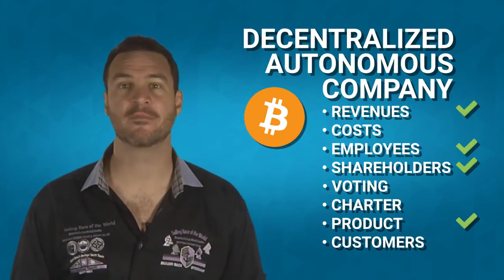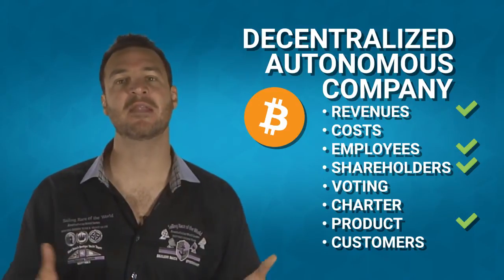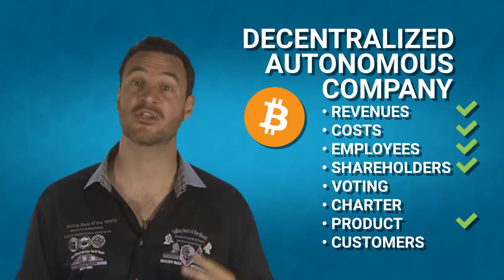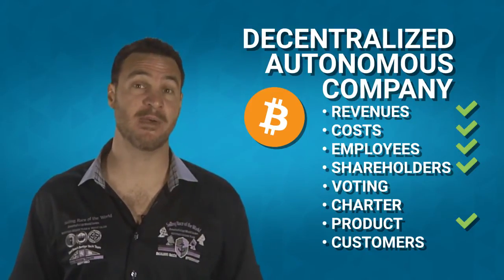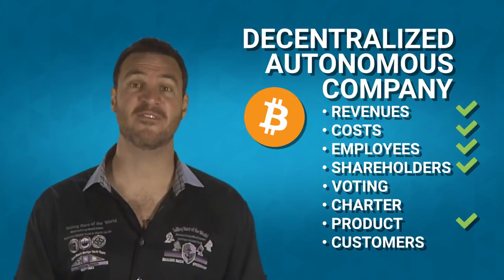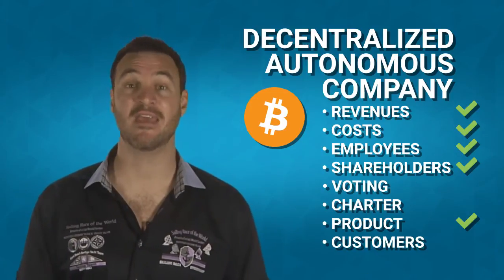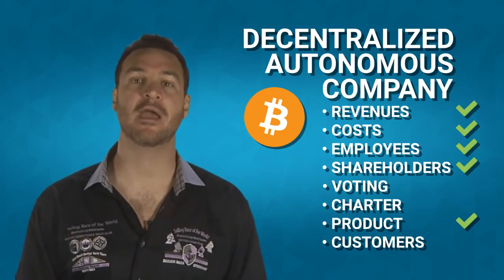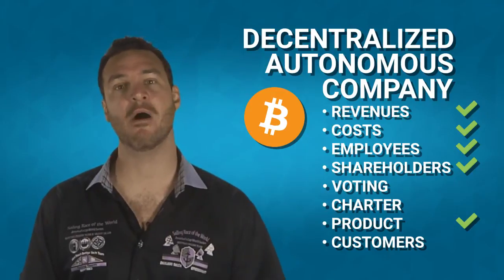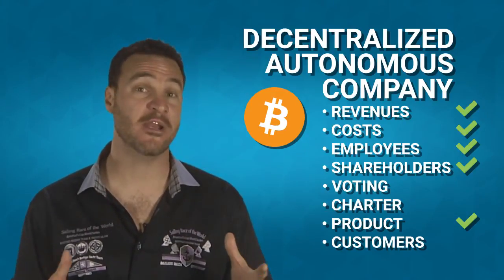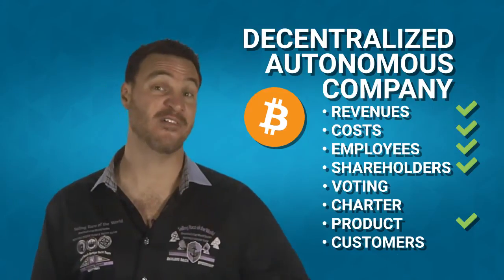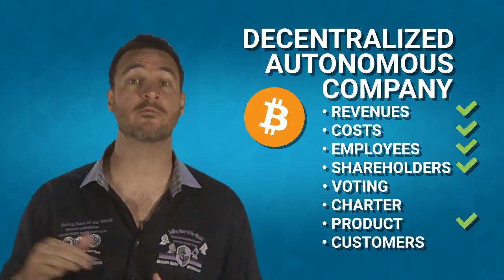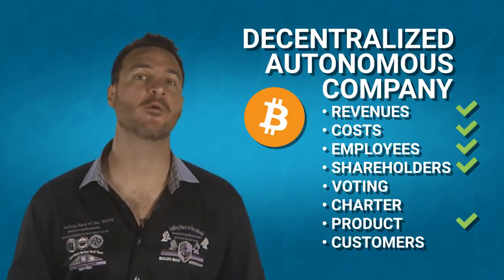Bitcoin has employees — they are called miners. Miners secure the network and facilitate these payments. Bitcoin has costs: it pays those employees via two mechanisms. The first is the fees we spoke about earlier — 100% of the fees earned by the Bitcoin company are passed on to the miners as salary. The second is through the dilution of shares. Bitcoin regularly creates new Bitcoin called block rewards and gives it to the miners to supplement their salary. Because Bitcoin is also a currency, we call that inflation, but in the context of a DAC it is called share dilution. Eventually this dilution will reduce to zero and miners will have to work for fees only.